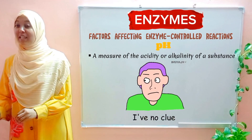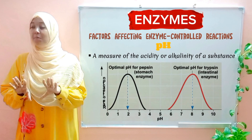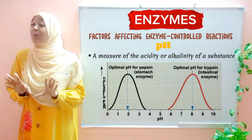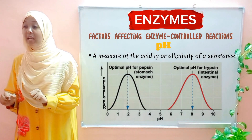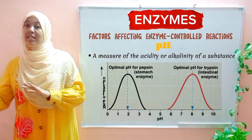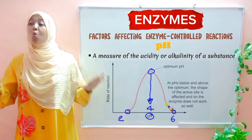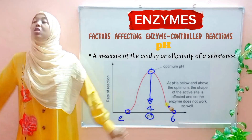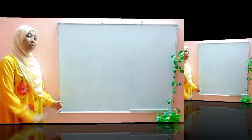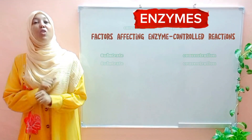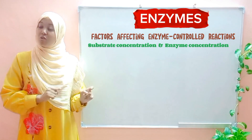Enzymes prefer a specific optimum pH, and they are specific — some prefer a neutral pH while others prefer an acidic or alkaline pH. Extreme changes in pH will cause the enzyme to become denatured and therefore the rate of the reaction will slow down. Moving on to the next factor: substrate concentration and enzyme concentration.